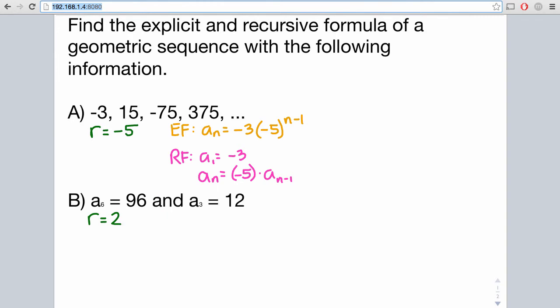To find A1, we need to set up an explicit formula. So you can pick either the sixth term or the third term to work with. I'm going to go with the third term. So we'll set up our equation as 12 equals, we don't know the first term, times our common ratio, which is 2, to the n minus 1 power, where n is 3 in this case, because you have the third term. And then we're going to solve for A1. So I'll simplify to get 2 squared, and 2 squared is 4. So that means that our first term is 3.